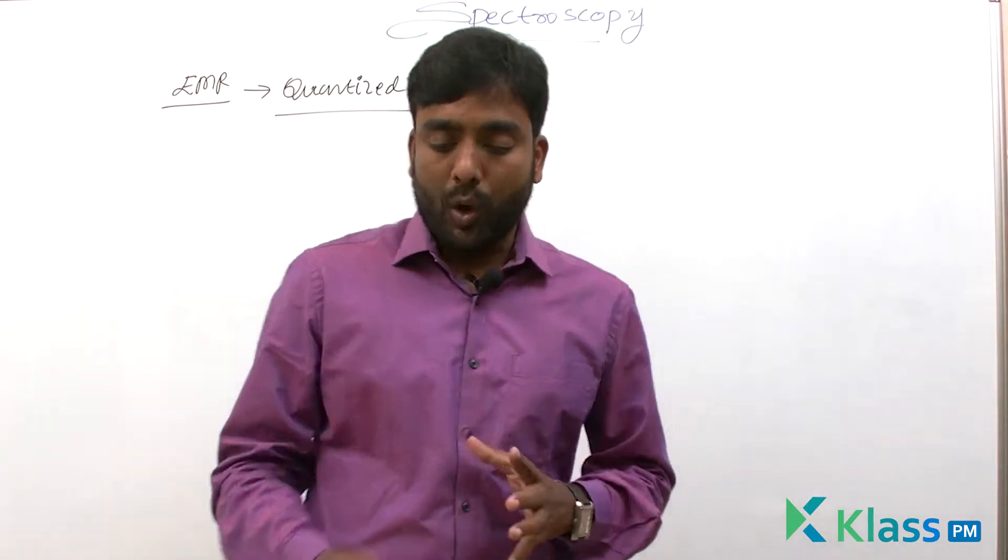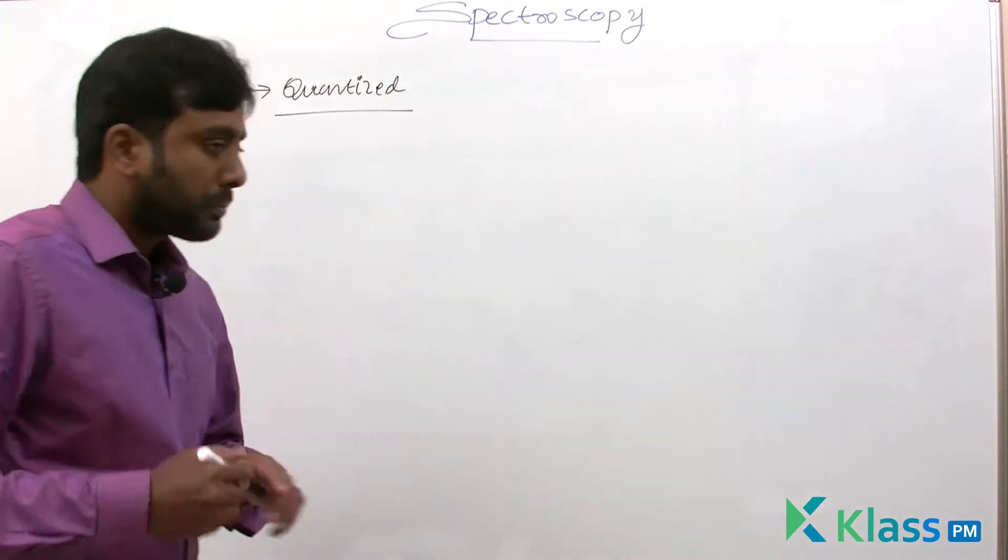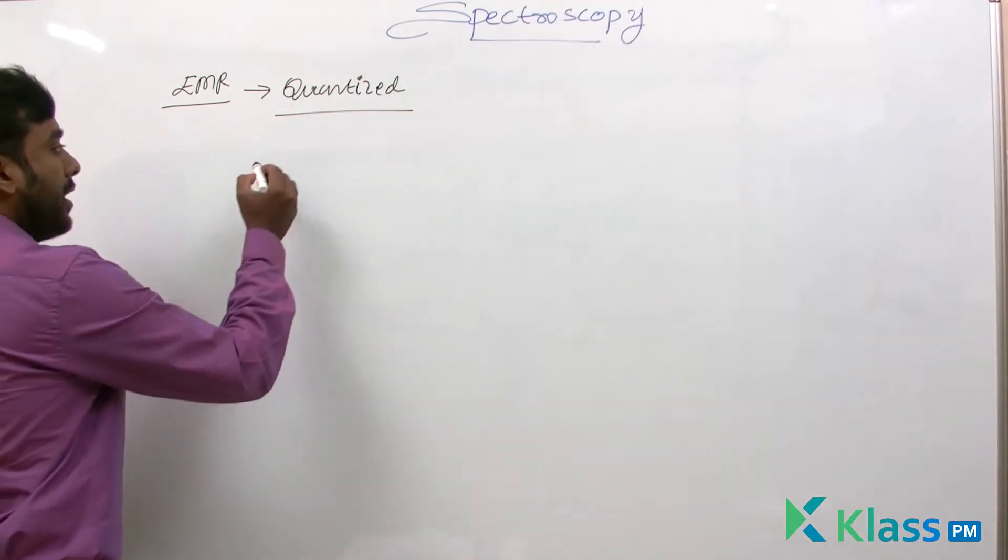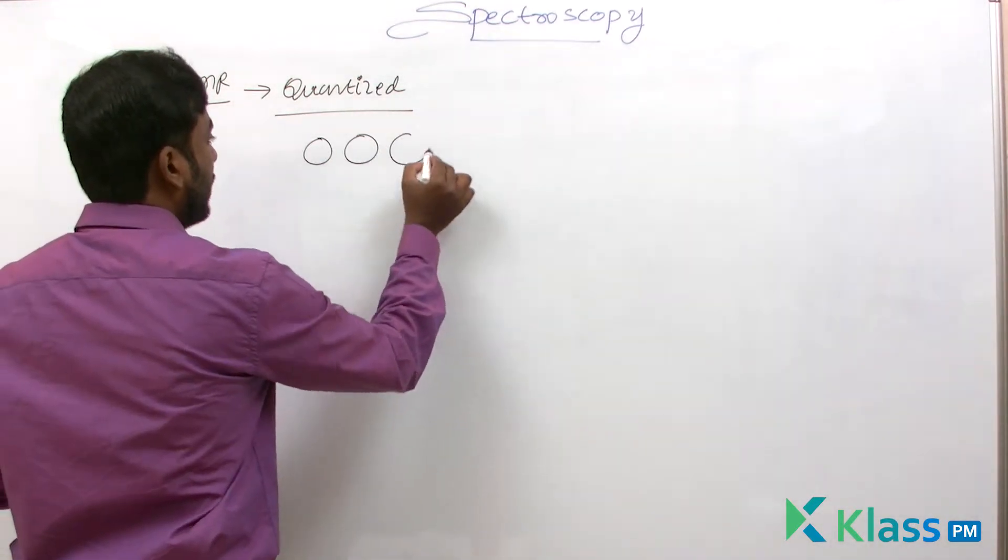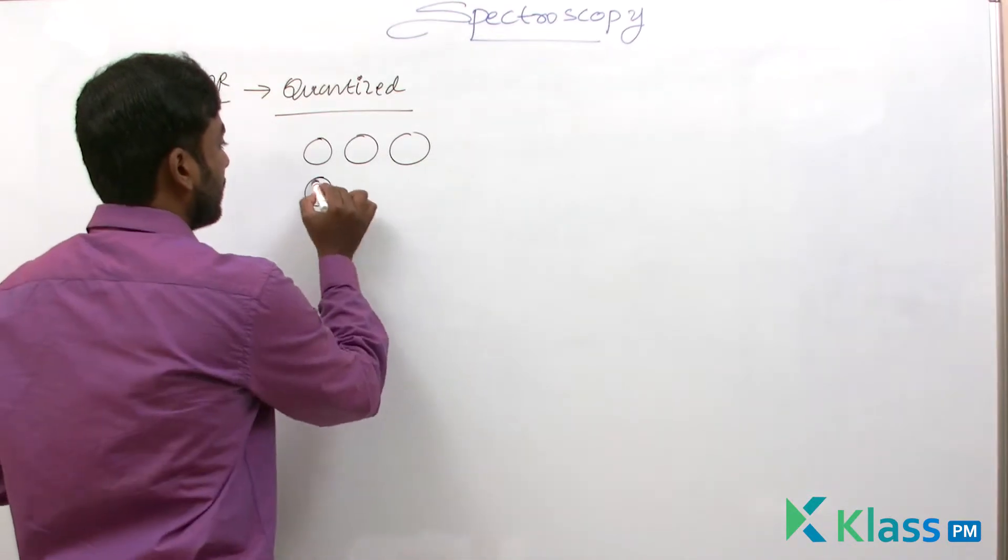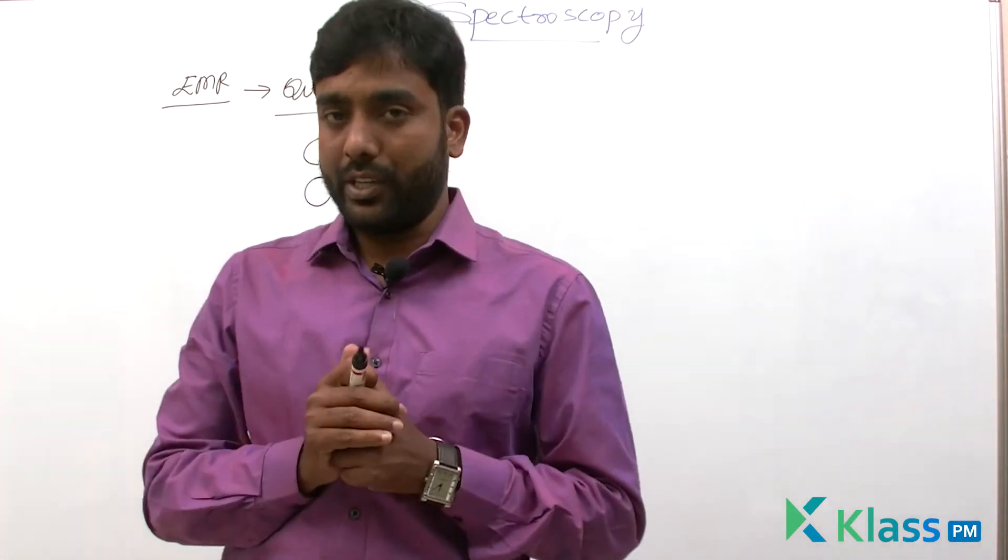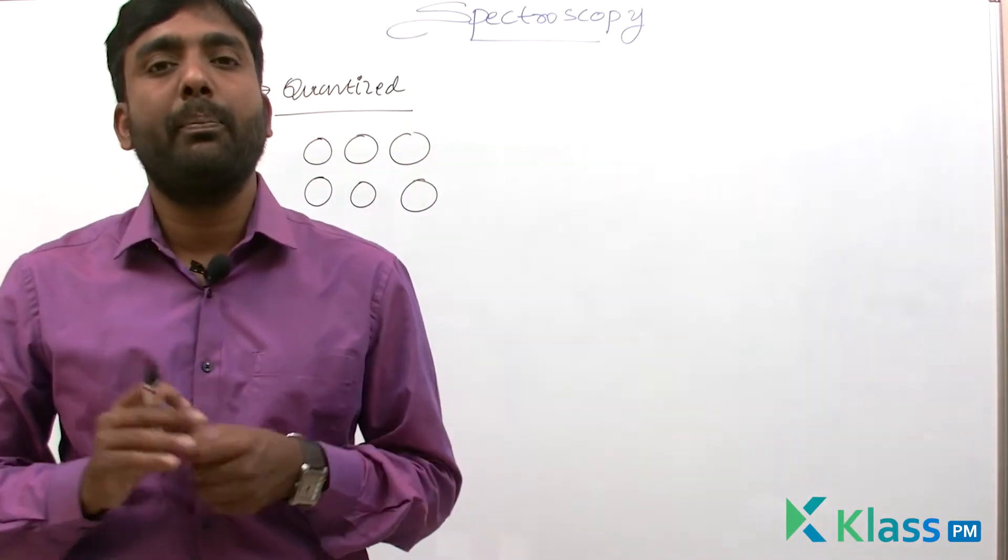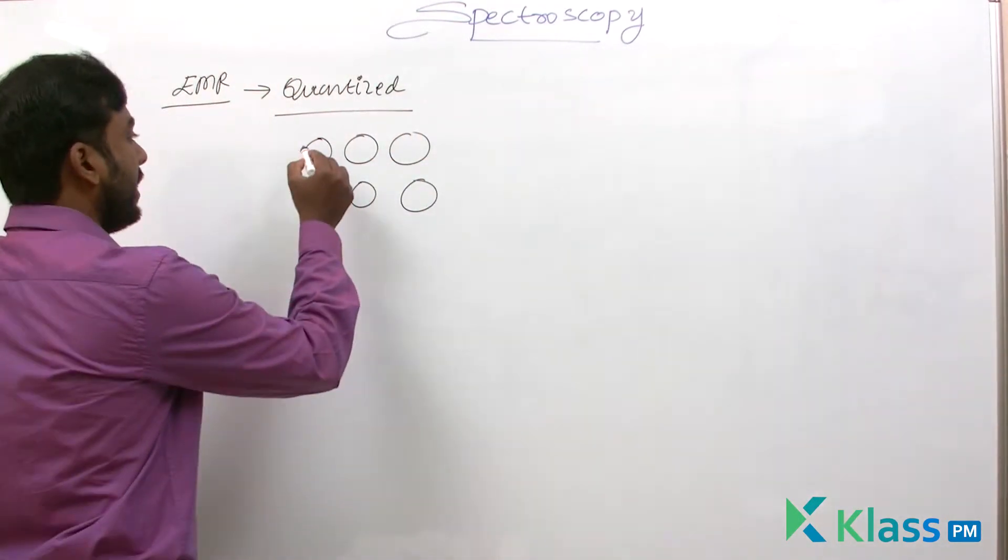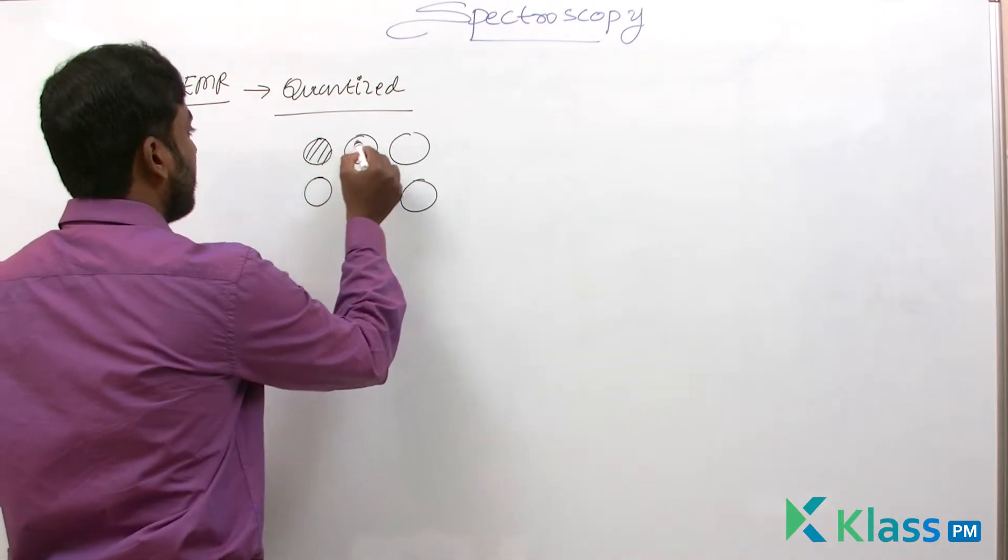So how can we explain this? According to Planck, electromagnetic radiation travels in the form of packets of energy. Each packet has a particular energy related to the frequency of that radiation.